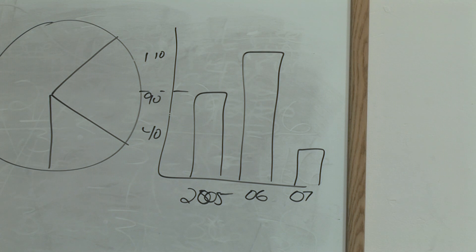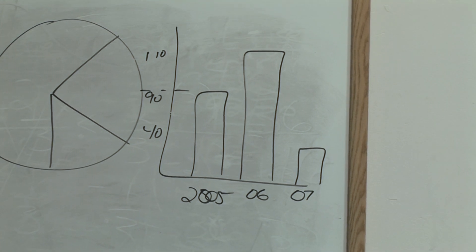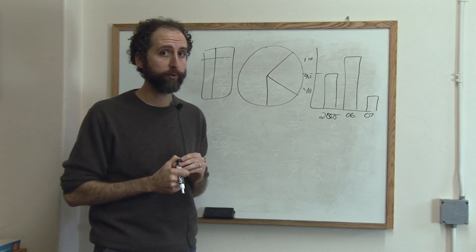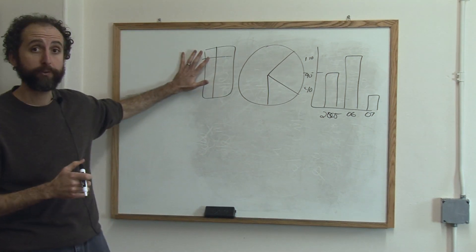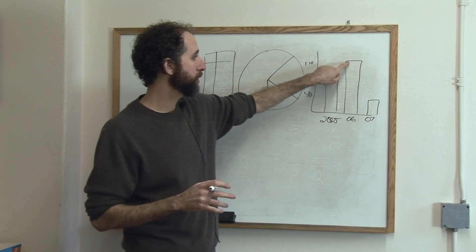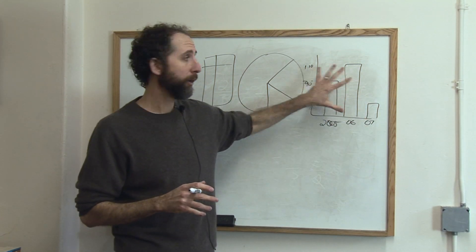So this bar graph would be readily accessible to people. A bar graph is actually not so much for the number. If you want people to know the number of inches of snow, you're probably better off with your table. But if you want people to get a sense of which one had the most, which one had the least, a bar graph is way better.